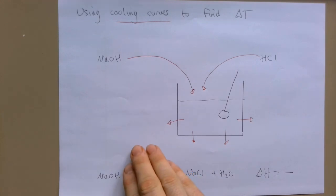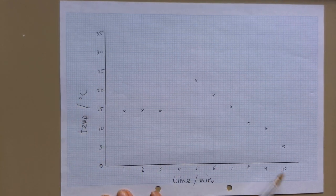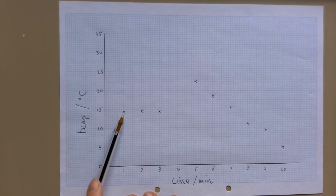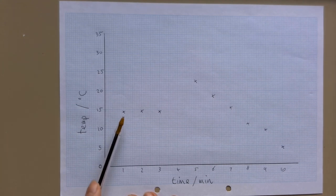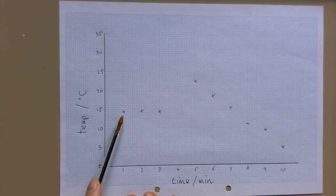So how does it work? Here's a graph. I've got temperature against time. And for the first three minutes, I'm just going to add one of my chemicals to the liquid, let's say it's the sodium hydroxide. And I'm going to record the temperature of that solution. Now as it's just sodium hydroxide, nothing's happening, there's no reaction going on, so the temperature should remain about constant.